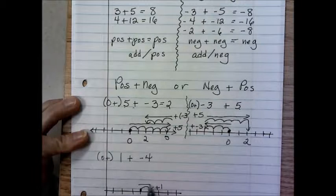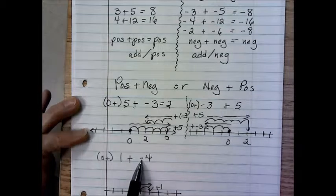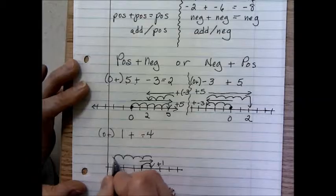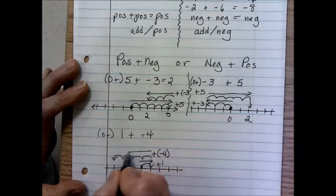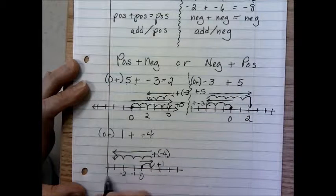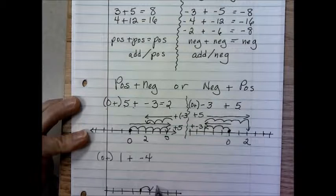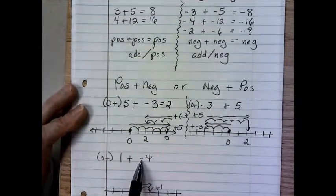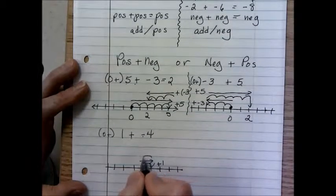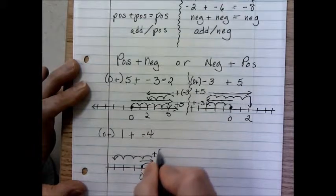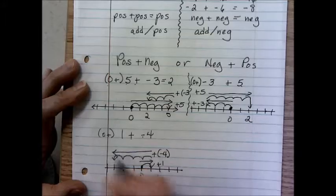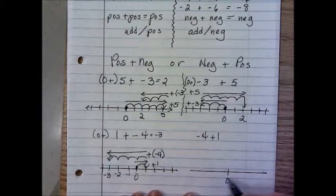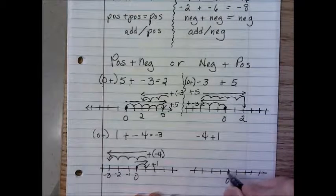Let's try another one: 1 plus negative 4. Adding the imaginary zero in front, we start at zero on the number line. Adding 1 moves us to the right. Then adding negative 4 means going to the left — one, two, three, four — and we wind up at negative 3. So 1 plus negative 4 equals negative 3.